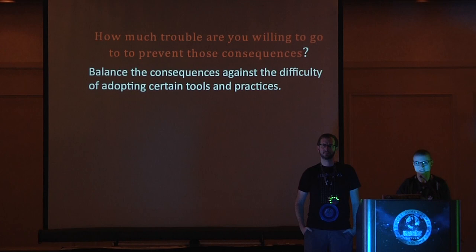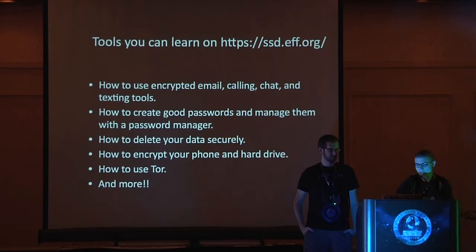The last question — and this is how you help decide what you're going to do and what kind of steps you're going to take for your own security — is how much trouble you're willing to go to to prevent those consequences. For instance, if you are texting your friends a lot and you decide that you want to start using end-to-end encrypted text messaging so that your texts are more secure, a lot of your friends are probably going to be like 'Signal, what's that? I don't really want to put that app on my phone.' On the other hand, it might be a really good idea for you to do that and you might want to try to convince them.